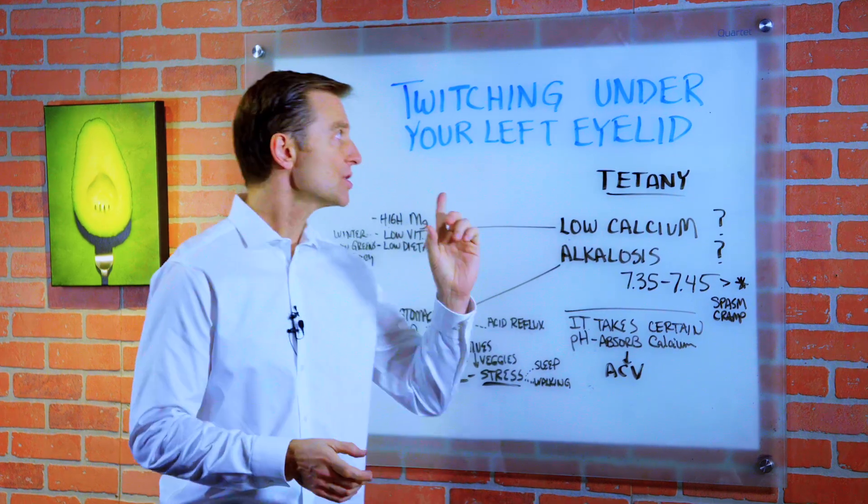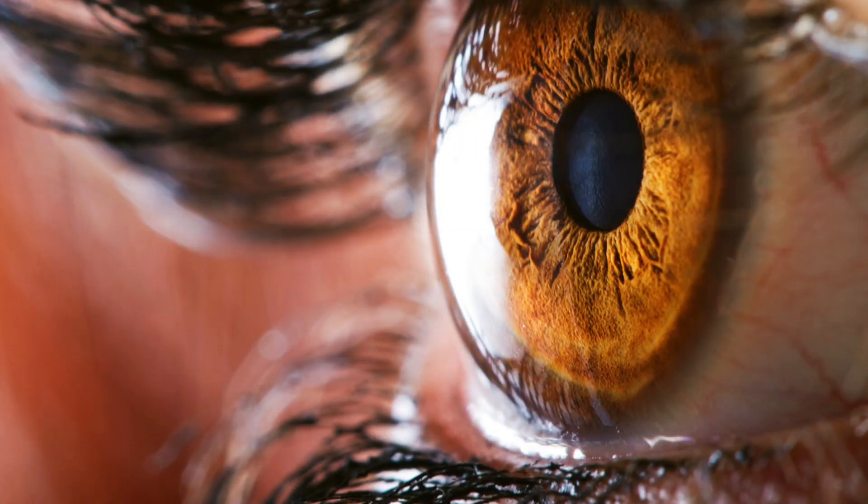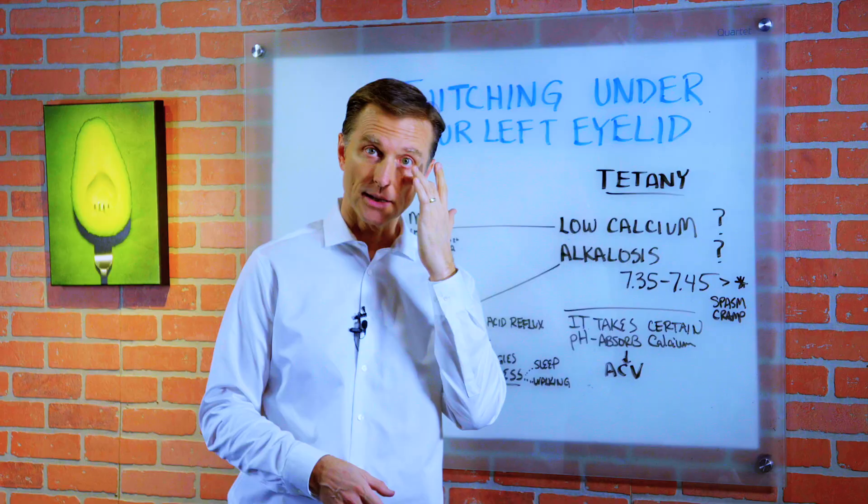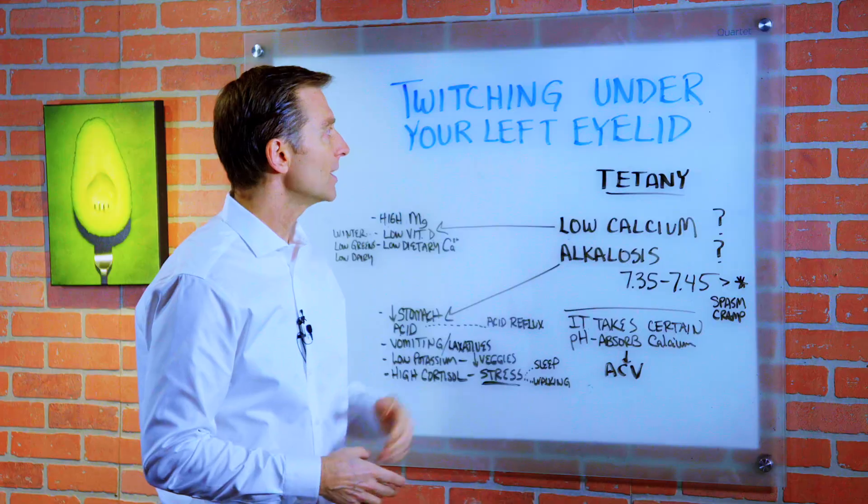Hey guys, today we're going to talk about twitching underneath the left eyelid. Don't ask me why it's on the left side. Normally it could be on the right side, but most of the time it's underneath the left eyelid. Sometimes it's on the arm, sometimes it's another part of the body. So what is this?